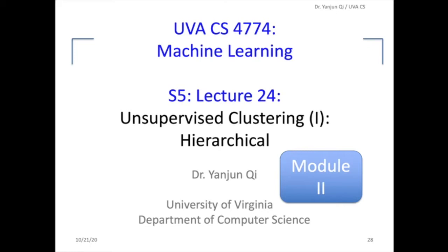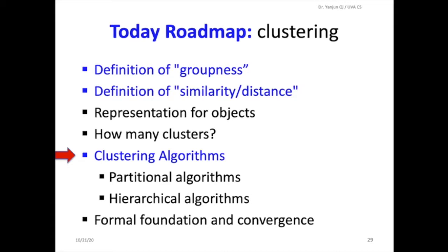This is the second module for Lecture 24 on unsupervised clustering, focusing on hierarchical clustering. This is the last section, section 5, in the machine learning class covered this fall. In module 1 we talked about the definition of groups, similarity and distance measures, and how to represent objects. We will cover how many clusters in the next lecture, Lecture 25. Now in module 2 we focus on explaining what the hierarchical clustering algorithm does.